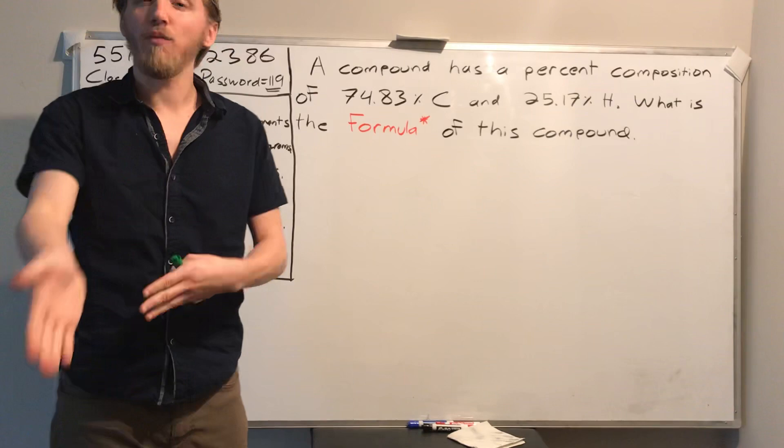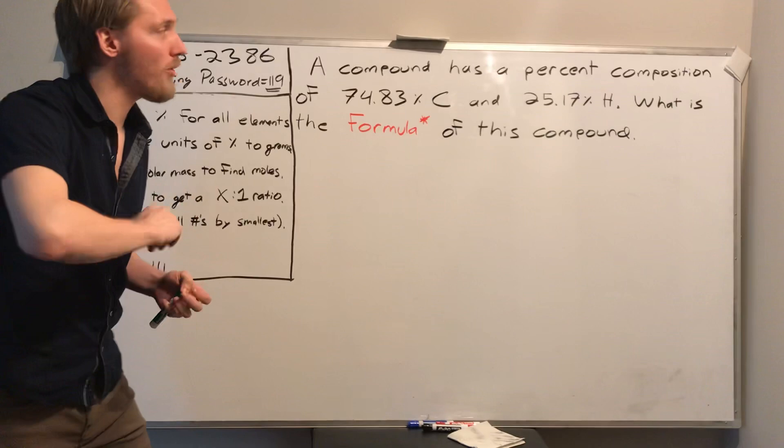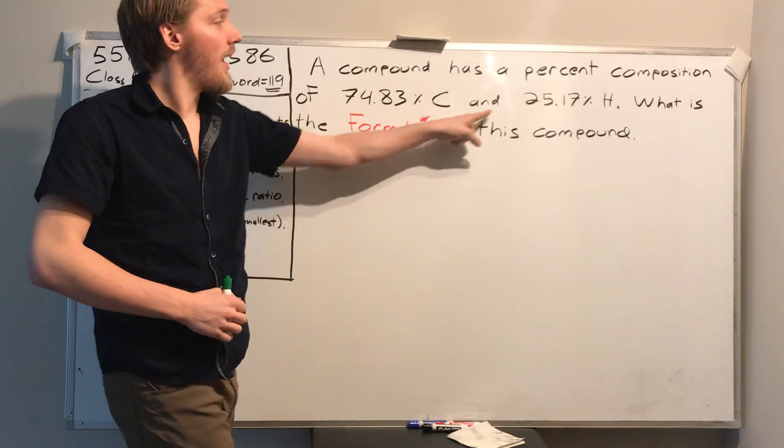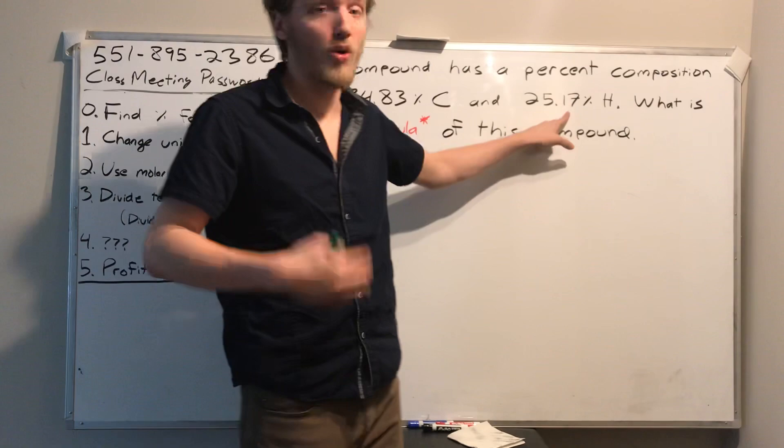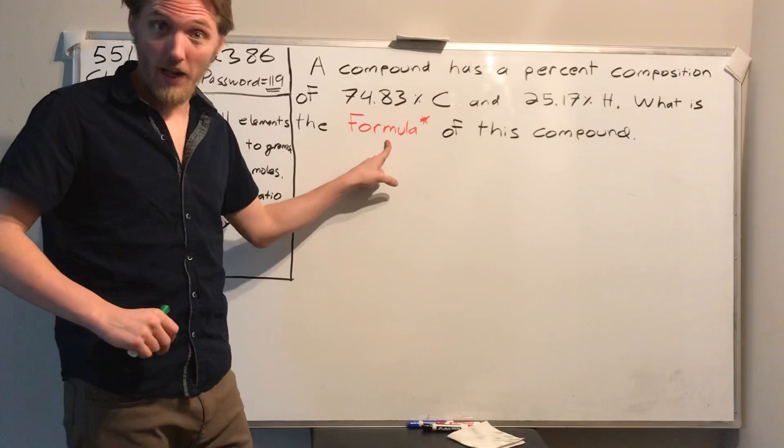Here's a question: a compound has a percent composition of 74.83% carbon and 25.17% hydrogen — roughly three quarters carbon, one quarter hydrogen by mass. What is the formula of this compound? We're trying to find the formula.